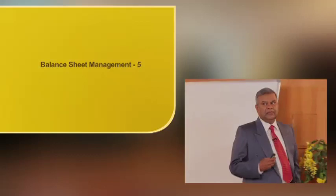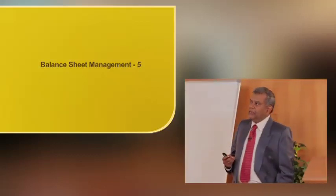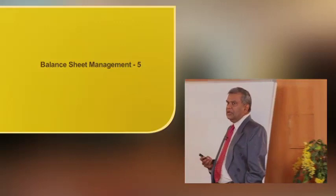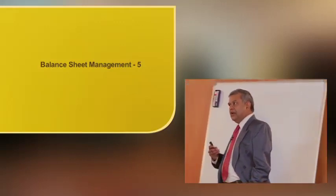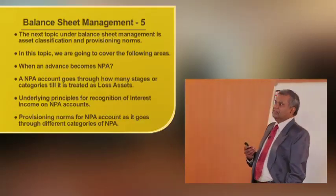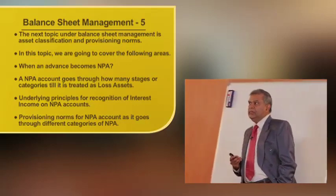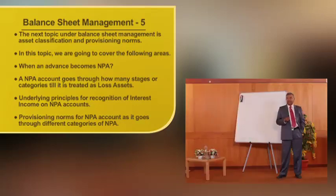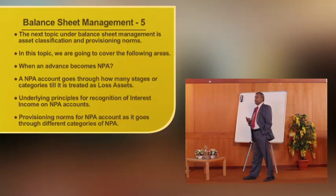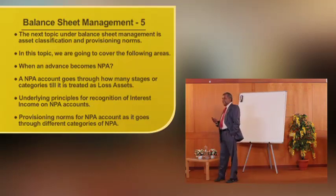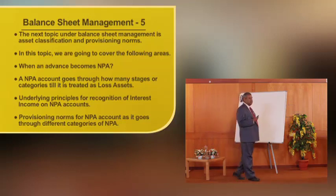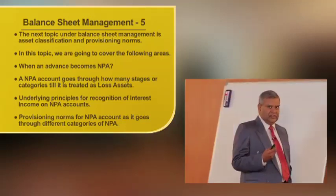There are chances a performing asset can become a non-performing asset, also called an impaired asset. The moment it becomes a non-performing asset, it loses earning capacity — the bank will not get any income from that asset. Moving to asset classification and provisioning norms, we will cover when an advance becomes NPA and the stages or categories it goes through till it is treated as a loss asset.